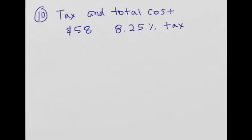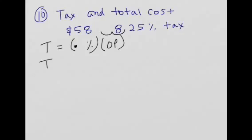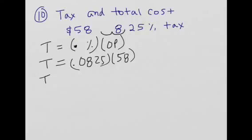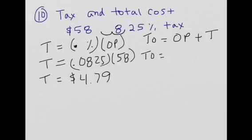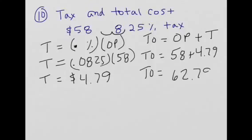Tax and total. The tax formula is: tax equals percent (as a decimal) times original price. Our tax rate is 8.25%, so 0.0825 times $58 gives tax of $4.79 — we round to the nearest penny. For the total, take the original price plus tax: $58 plus $4.79 equals $62.79.